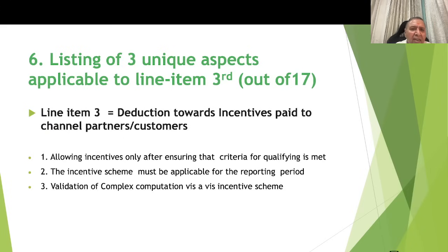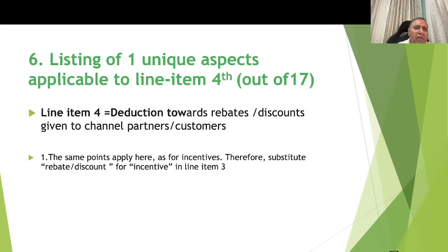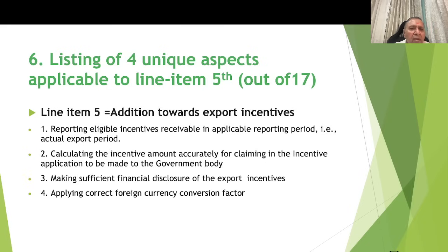For line item 3 — deduction towards incentives paid to channel partners or customers — three unique aspects apply: allowing incentives only after ensuring the qualifying criteria for the incentive scheme is met; ensuring the incentive scheme is applicable for the current reporting period and not a previous period; and accurate valuation of complex multi-tier incentive schemes. For line item 4 — reduction towards rebates and discounts given to channel partners — the aspects are similar to incentives, simply replacing the word 'incentive' with 'rebate and discount,' counted as one unique aspect to avoid duplication.